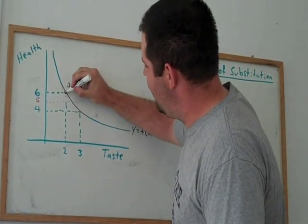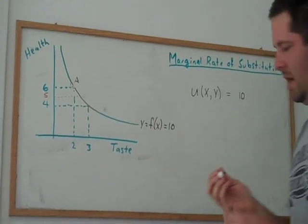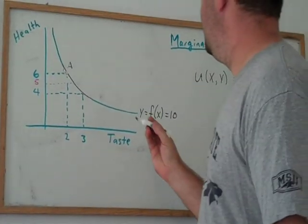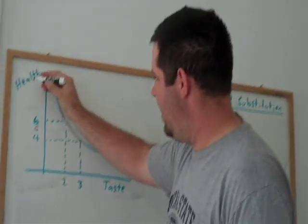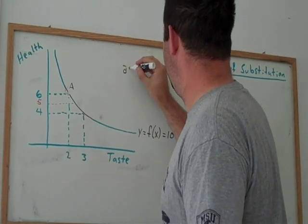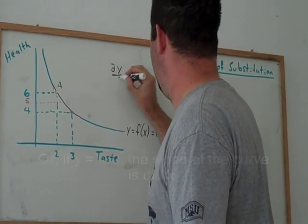We want to think about it as the slope here at point A. Now if you remember from your calculus classes, slope is just going to be, if we think of health as y and taste as x, it's just going to be dy/dx.